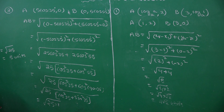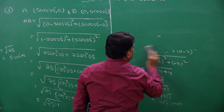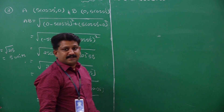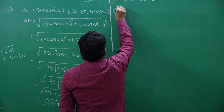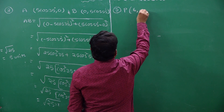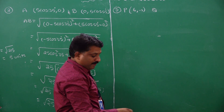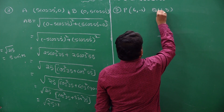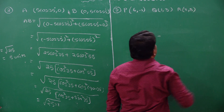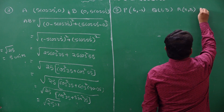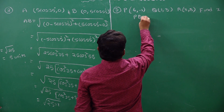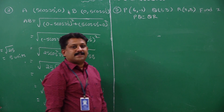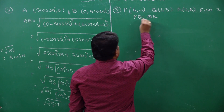Now we go for one more problem related to distance between two points. In this case, I have three points: P(6, minus 1), Q(1, 3), and R(x, 8). The problem is asking to find the value of x if PQ is equal to QR. This means the distance between the two points P and Q is equal to the distance between Q and R.